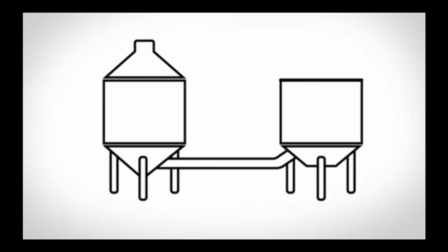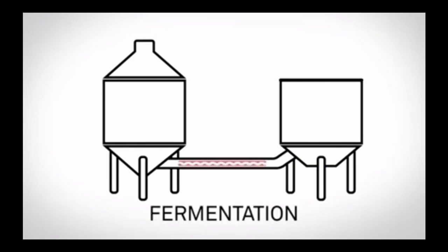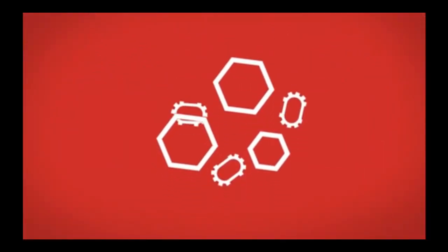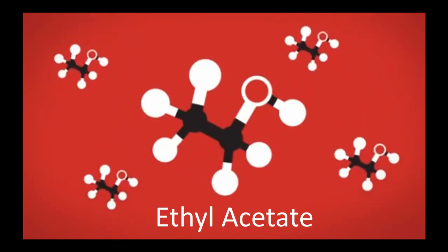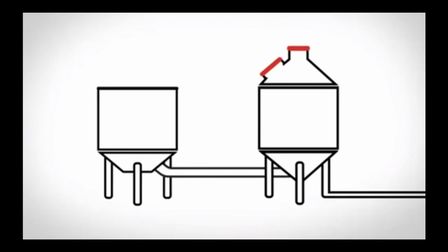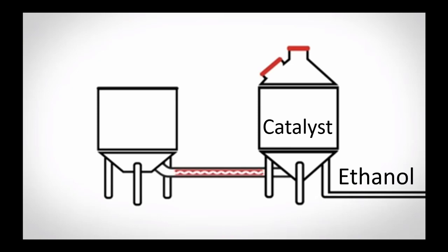The next step is fermentation, where the sugars are fermented by naturally occurring bacteria to produce acetic acid. Then, during esterification, the resulting acetic acid is combined with an intermediate product and converted to ethyl acetate. During hydrogenation, ethyl acetate is then reacted with hydrogen with a catalyst to make ethanol.